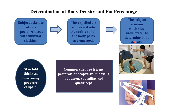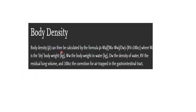The subject remains motionless underwater to determine body volume. Skinfold thickness is measured using pressure calipers. Common skinfold measurement sites are: triceps, pectorals, subscapular, mid-axillary, abdomen, suprailiac, and quadriceps. A connector formula is used to calculate body density from these measurements.